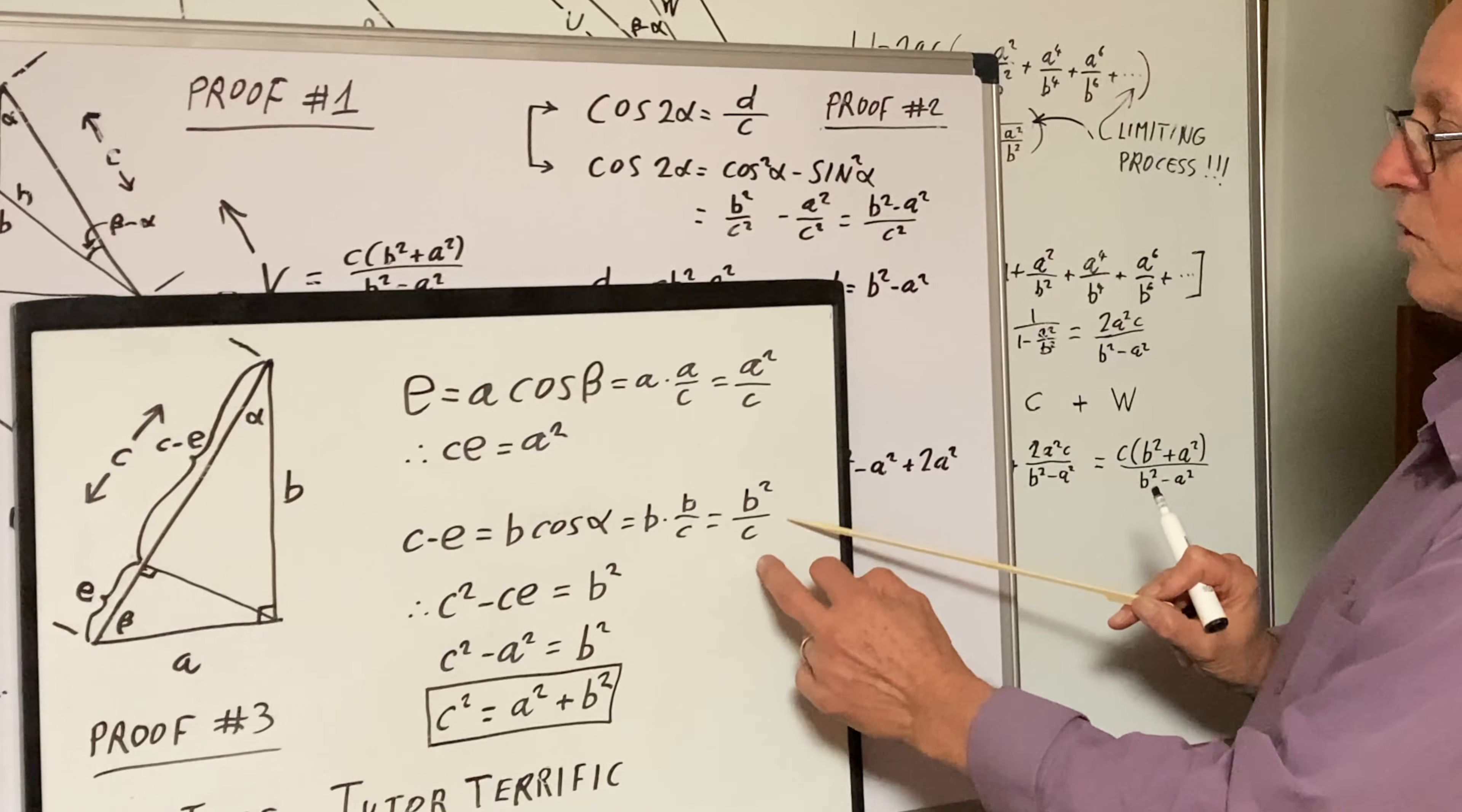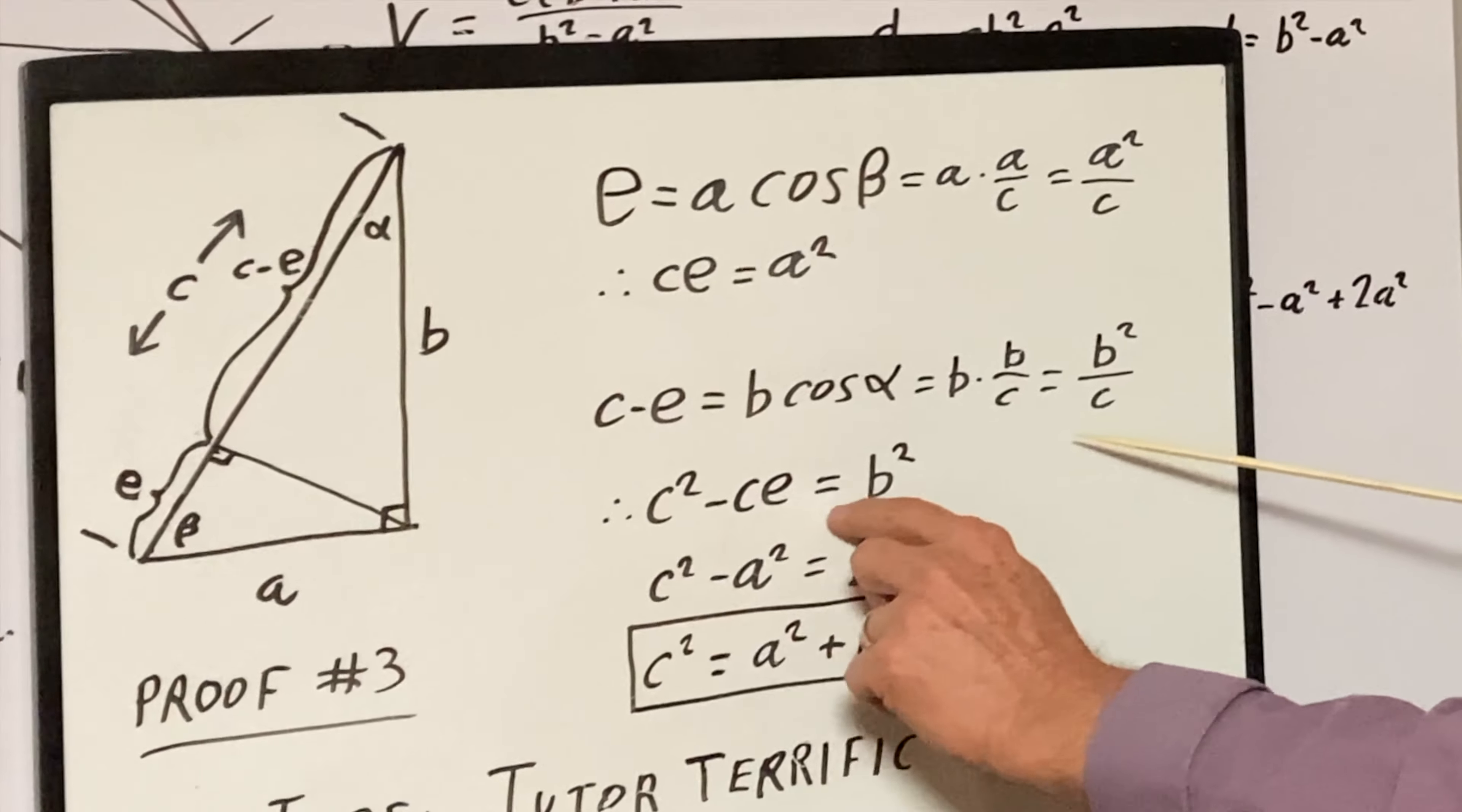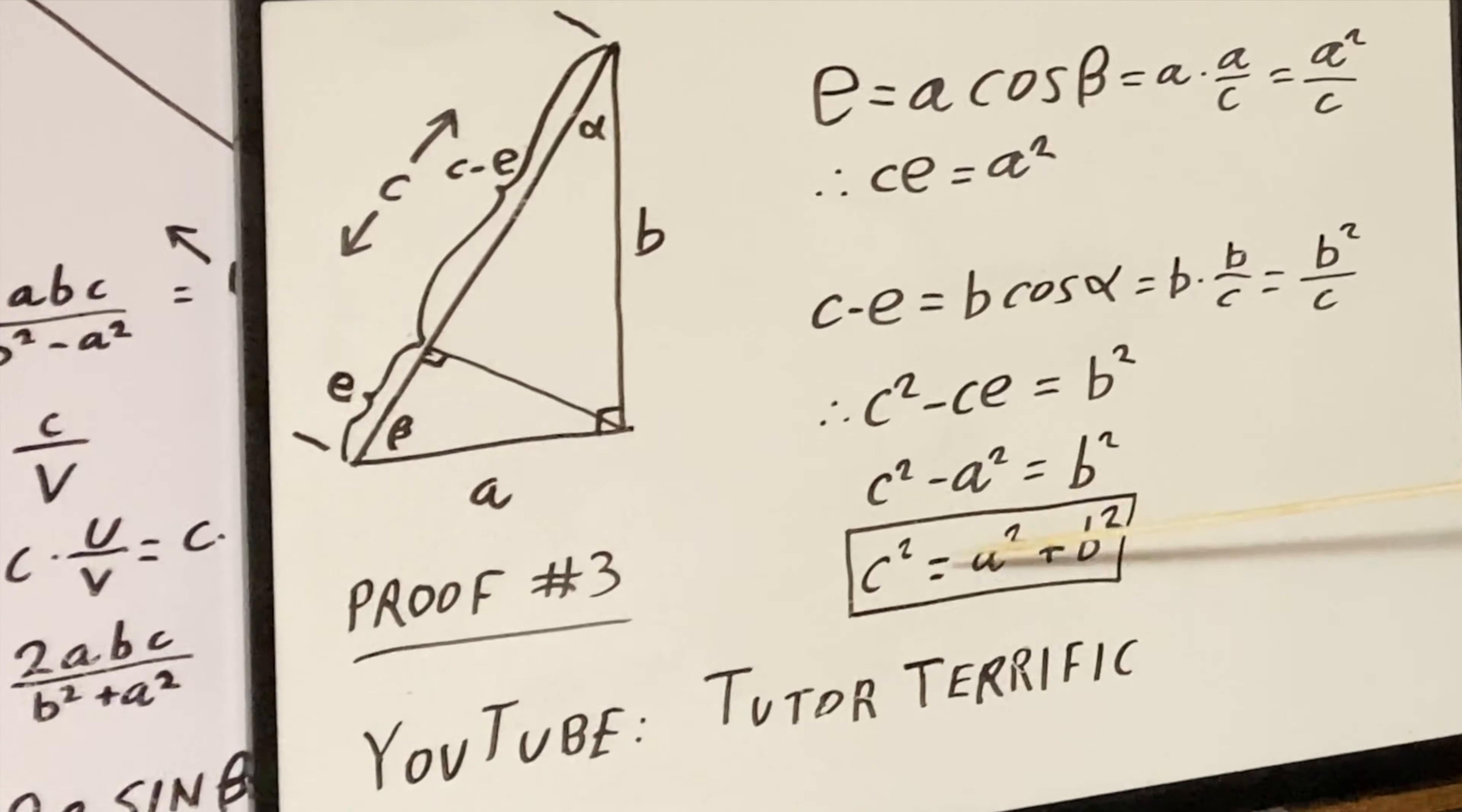Now when you crank through, eliminate the denominator, you get C squared minus CE equals B squared. But look, CE equals A squared. So C squared minus A squared equals B squared, giving us our famous C squared equals A squared plus B squared.